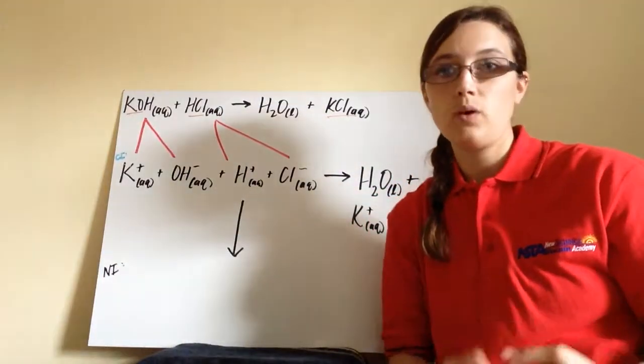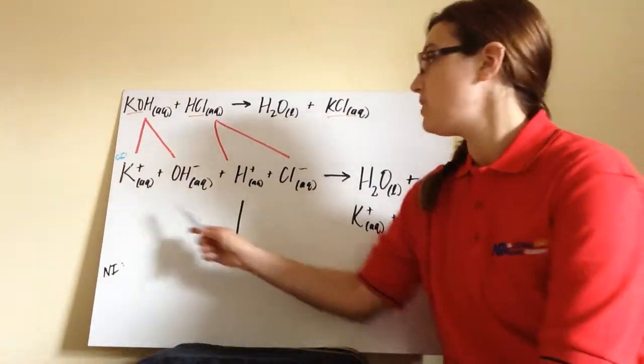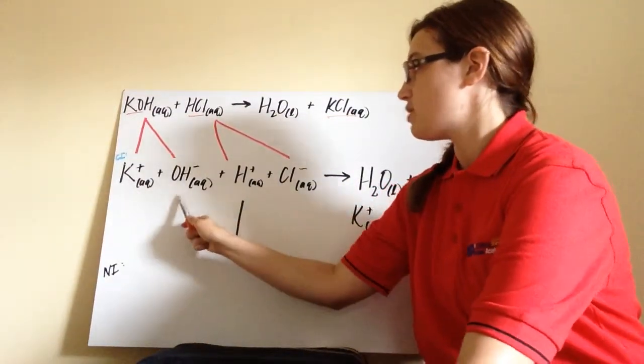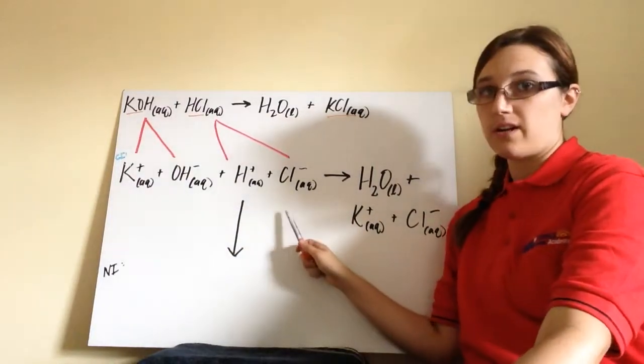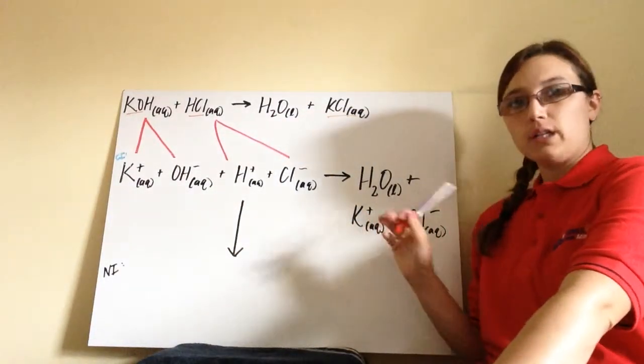So potassium hydroxide breaks down into K-plus, plus OH-. Notice I have the symbol, I have the charge, and I have the state of matter. All three of those are important. So I have potassium hydroxide broken down. I have hydrochloric acid broken down because it's a strong acid.